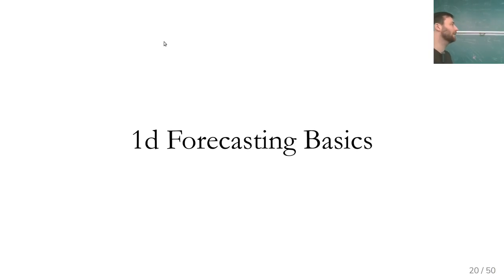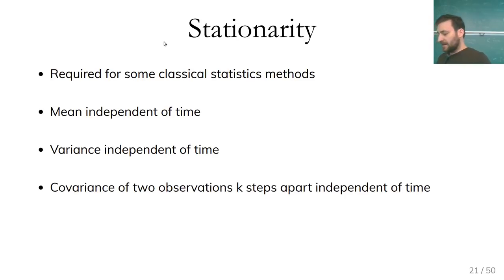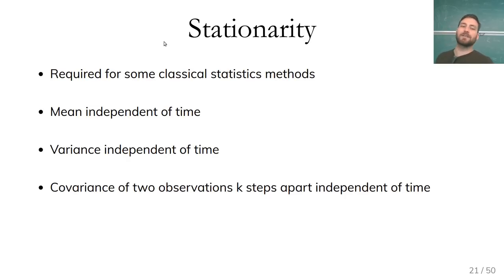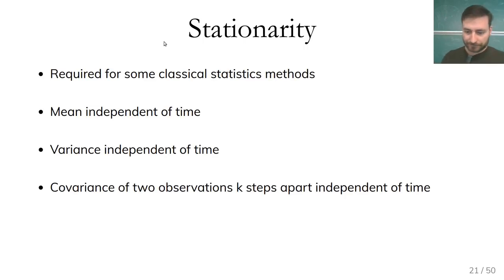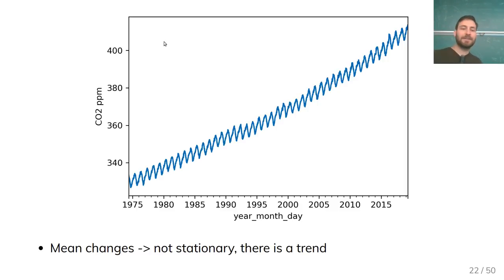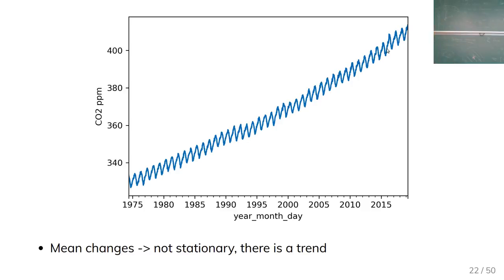We're going to focus on 1D forecasting. The first thing that statistics looks at in time series is stationarity. Stationarity means the mean is independent of time, the variance is independent of time, and the covariance between two observations k steps apart is independent of time. Basically, the process doesn't really change over time. For the CO2 series, it's very obvious the mean changes — so this series is clearly not stationary — and making a series stationary either helps the tools or makes the analysis easier.